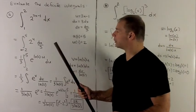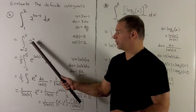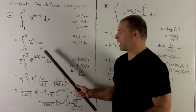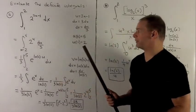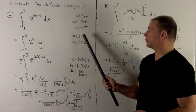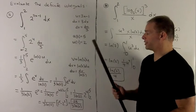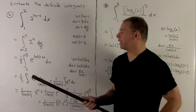I can substitute in, and what we wind up with is 2 to the u, du over 3. Everything is in u, so I might as well put the limits in terms of u. So u of 2 is 5, and then u of 1 is 2. So I'm going from 2 to 5 now.